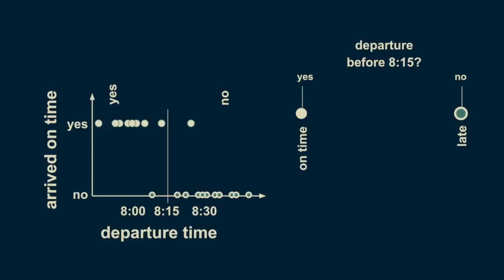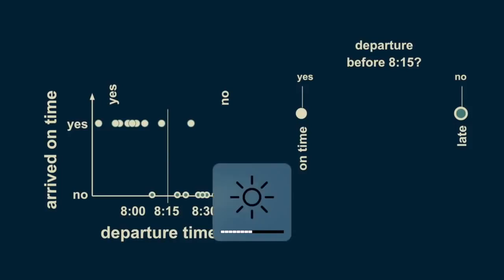There are two branches, a yes and a no. For consistency, we'll keep all of our yeses on the left. Placing this decision boundary divides the data up into two groups, and although there are some stragglers and exceptions, the overall pattern is captured by placing this decision boundary at 8:15. If you depart before 8:15, you can be reasonably sure of getting to work on time, and if you depart after 8:15, you can be reasonably sure of being late. This is the simplest decision tree possible — a single branch.